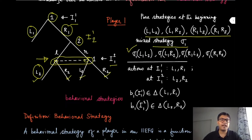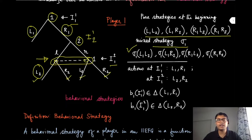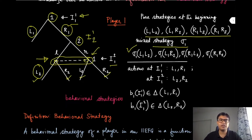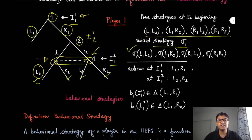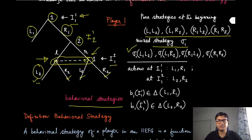Now you can think of another kind of randomization which does not list out all possible strategies at the beginning. Player one can just toss a coin at information set i11 and decide whether to play l1 or r1. Similarly, when it reaches information set i12, it can toss another coin — possibly giving a different probability distribution over l2 and r2. That looks more natural because there is independence across two different information sets. This type of strategy is what we are going to call a behavioral strategy, which is different from the mixed strategy definition discussed so far.